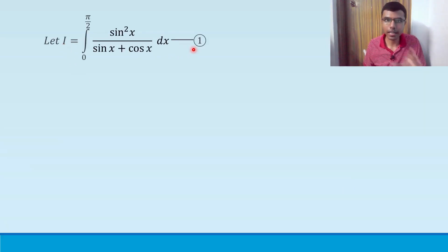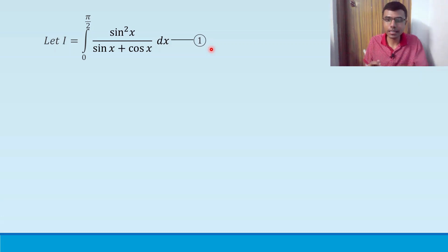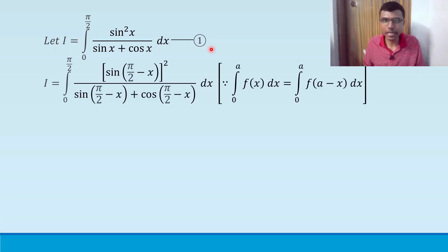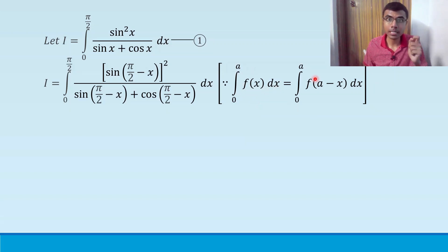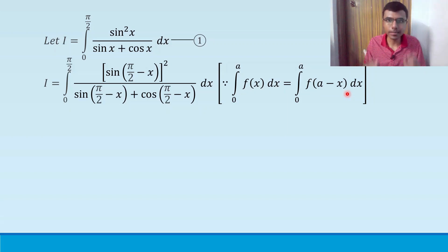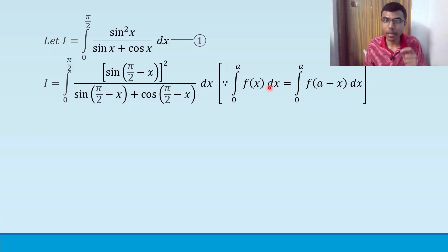First, take the given integral as I and mark it as the first equation. Now, in definite integration there is a property which states that the integral from 0 to a of f(x) dx is nothing but the integral from 0 to a of f(a minus x) dx. In simple words, instead of x you can substitute a minus x in the given function.